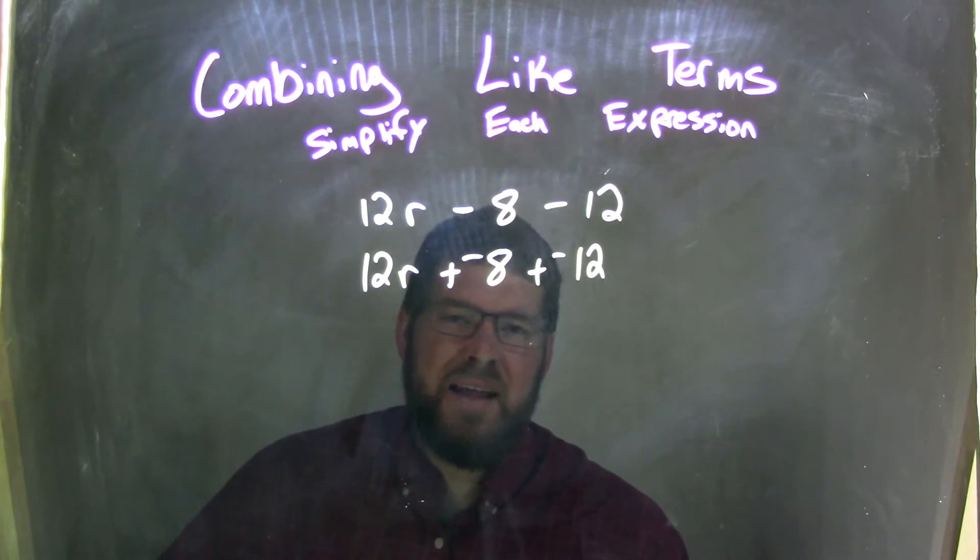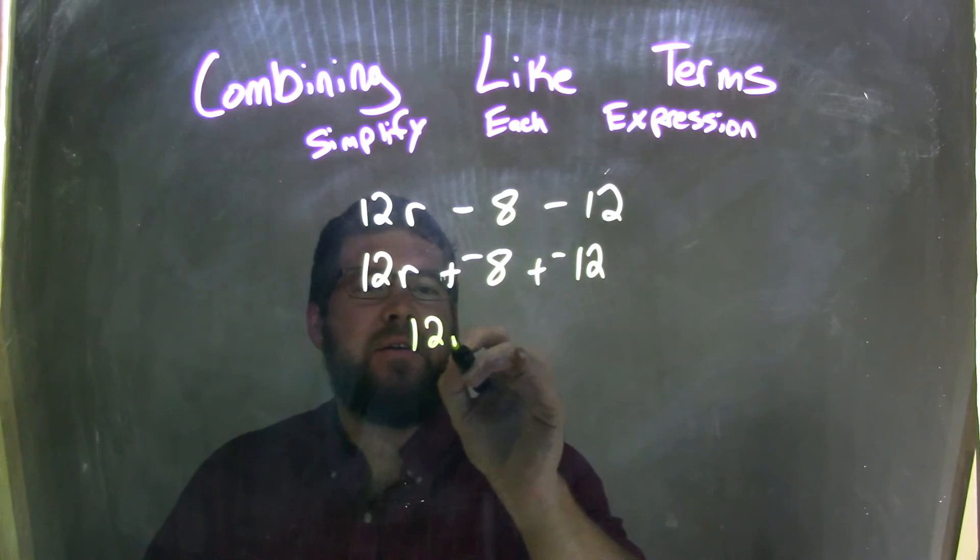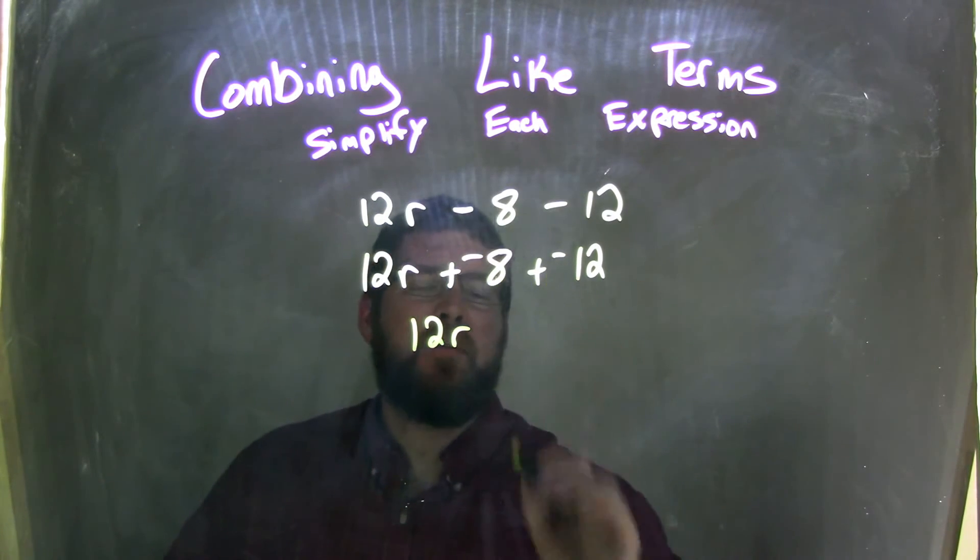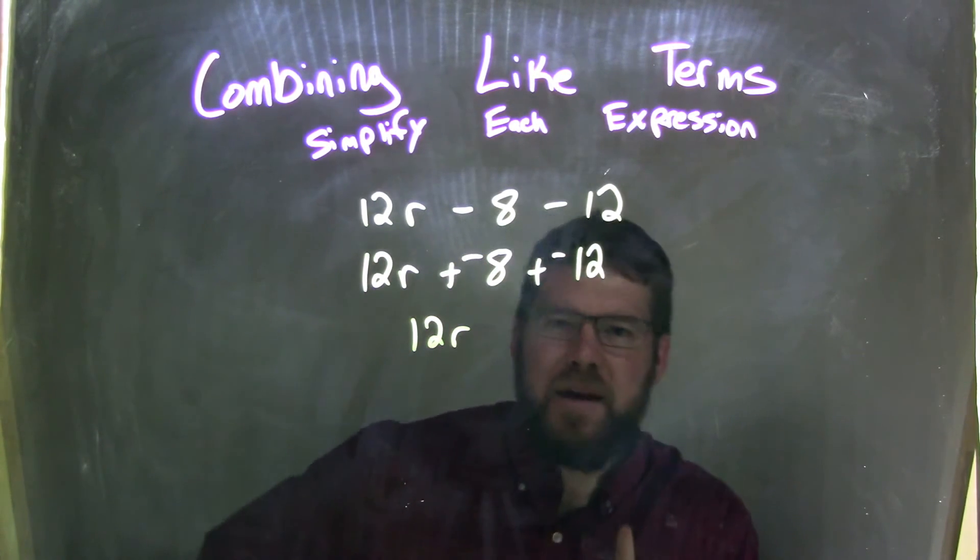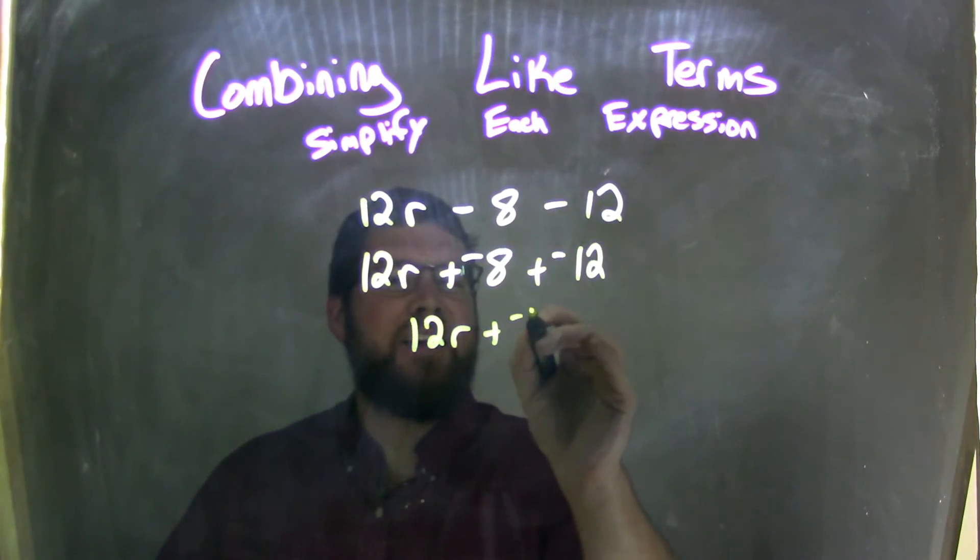12R and the negative 8 are not like terms, so we cannot add them. So, I'm just going to put a 12R down here. But now, we have negative 8 plus a negative 12. That we can easily see. They're both towards the negative direction. And that's plus a negative 20.